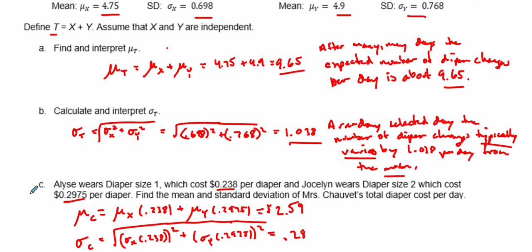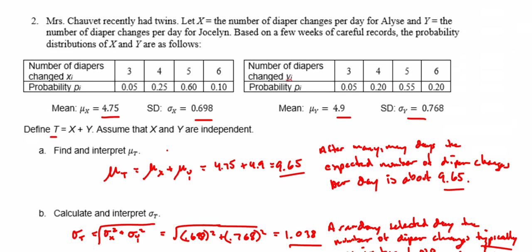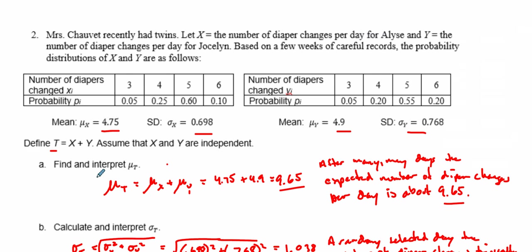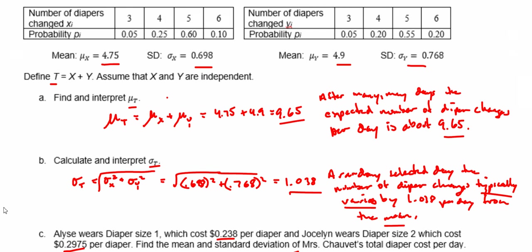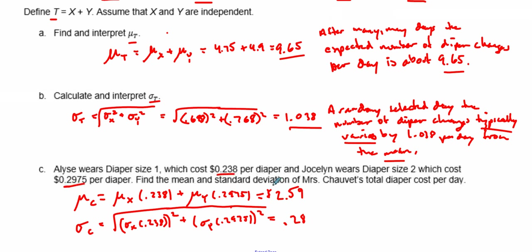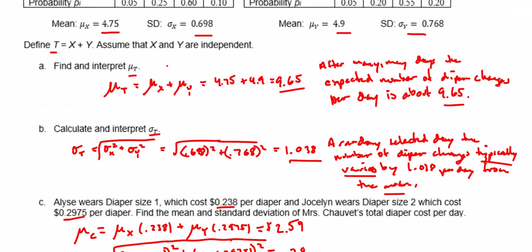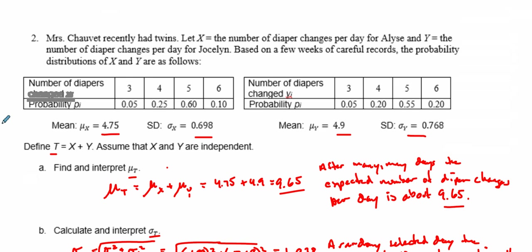And that's what we have there for the combination of functions. Once again, we're talking about how to find the expected value, standard deviation, and how to when we have different values being multiplied to the values. Well, I hope this helps you out and good luck with the rest of your problems.